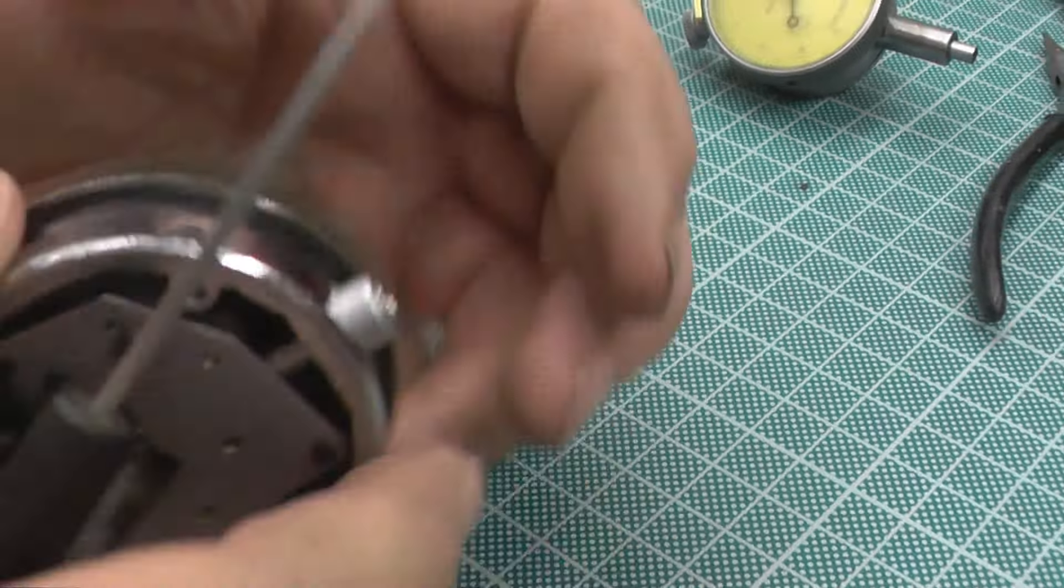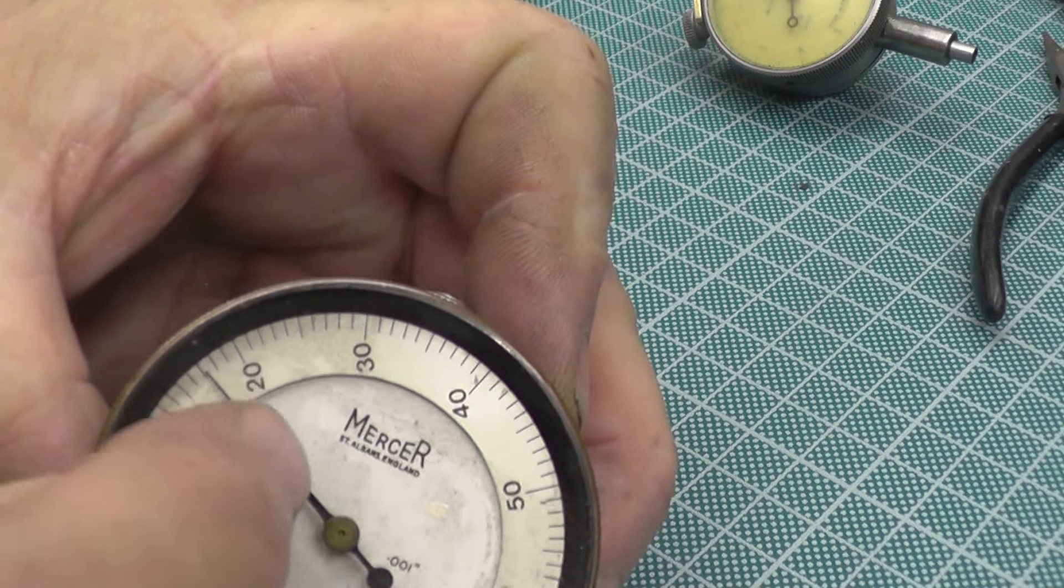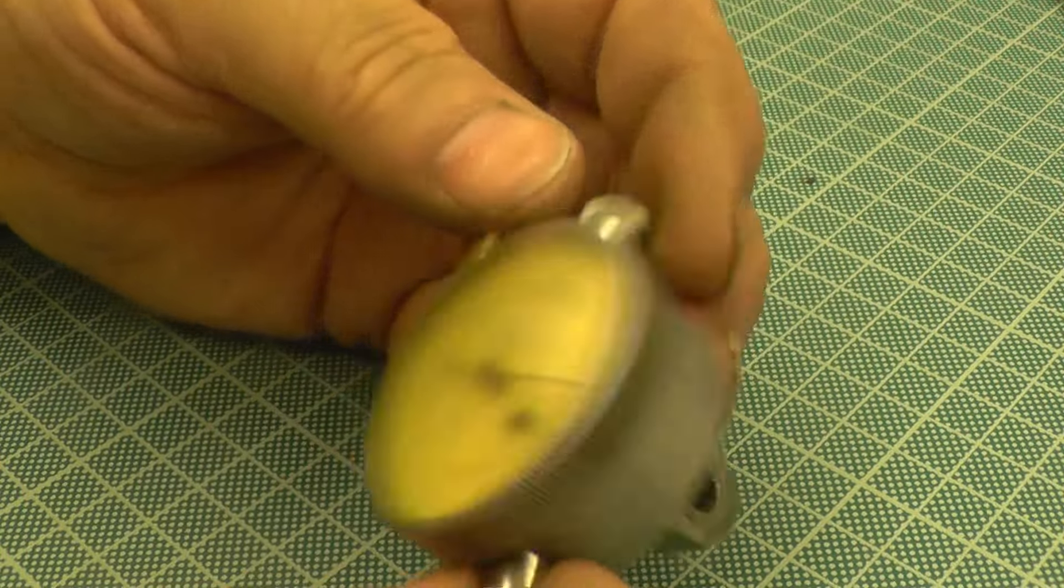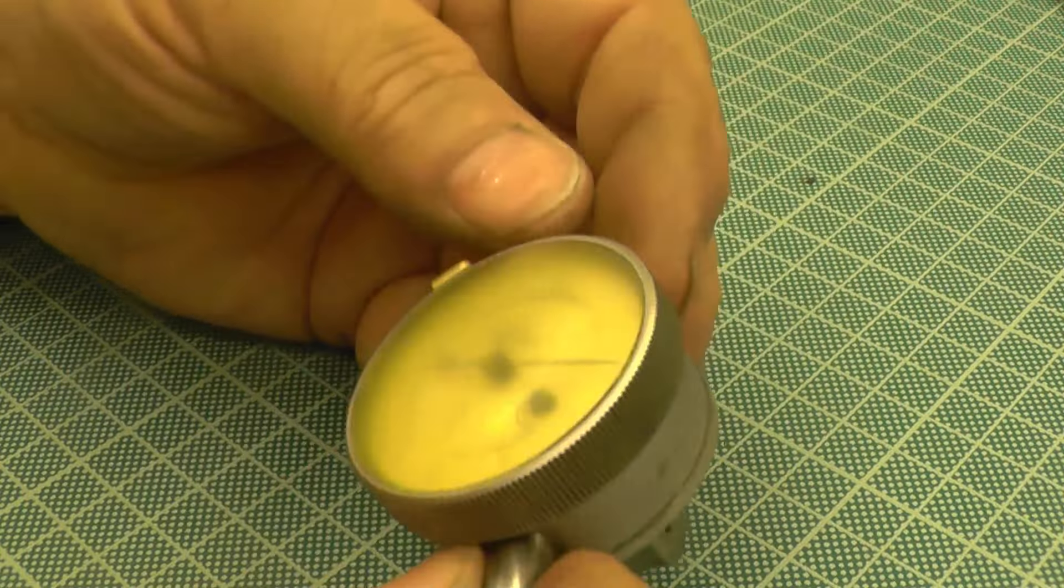So, you shove them back, and again, you remove the main bezel. But, again, you have to take the hands off. If you don't take the hand off, as I say, the main chapter ring, it's just a push fit. It's just a push fit into the bezel, but if you pull it, you'll actually bend that hand.